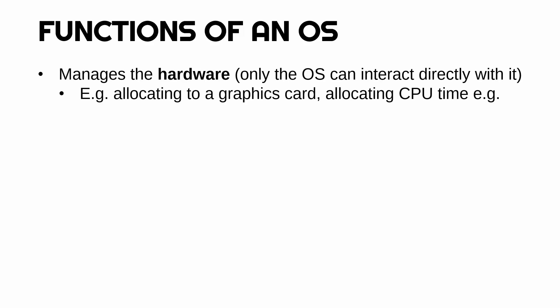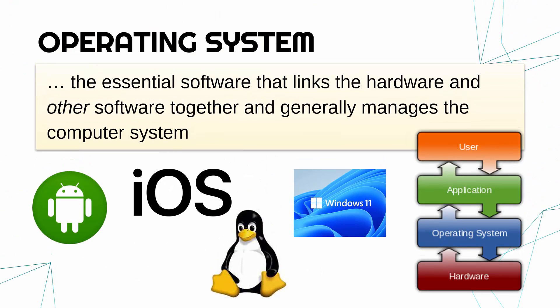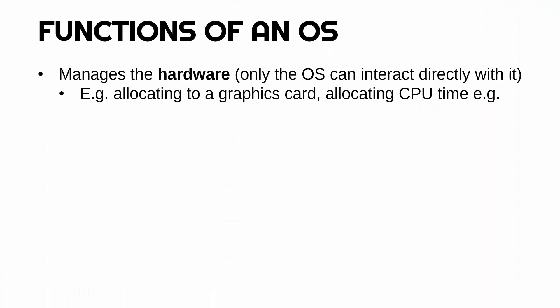Now, going through some of the main functions of an OS — you need to go into an exam with a few of these in your head and be able to briefly describe what they mean. The main function is to manage the hardware, because only the operating system can interact directly with it. It sits between the user, applications, and hardware. So it's the OS's job to allocate jobs — for example, it might allocate instructions to a graphics card, but crucially it will allocate time to the CPU, deciding what is executed by the CPU at any given time.